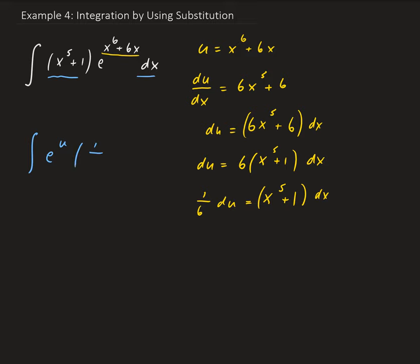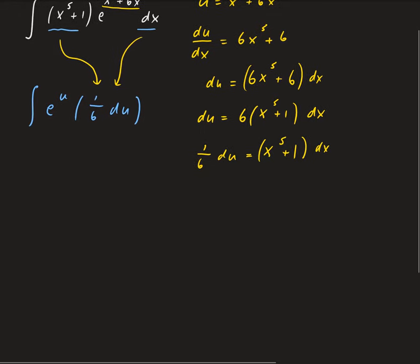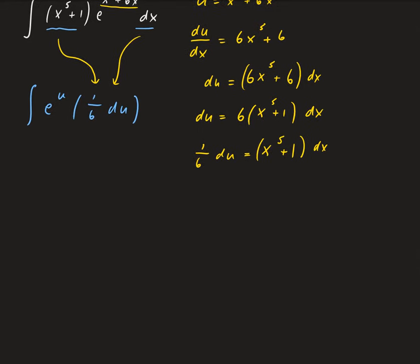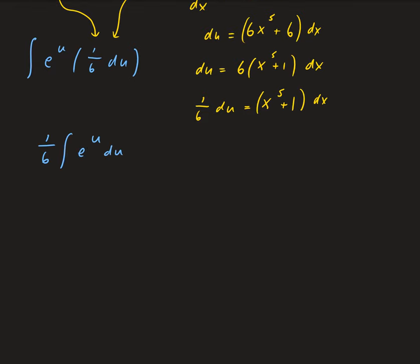We have one sixth du. So now we can go ahead and find the integral of this. This is going to be one sixth times the integral of e to the u du. The integral of e to the u is just e to the u.